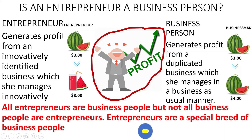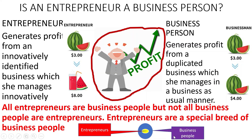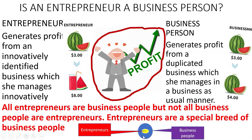You can see these two circles — the yellow and the blue. The yellow represents entrepreneurs and the blue represents business people. All the yellow is inside the blue. Therefore, all entrepreneurs are business people, but there are business people who are not entrepreneurs.